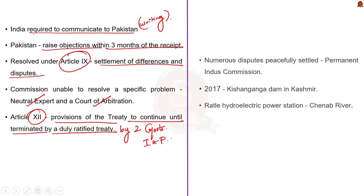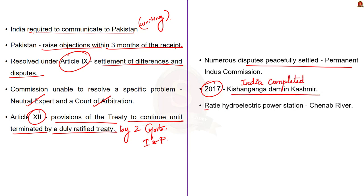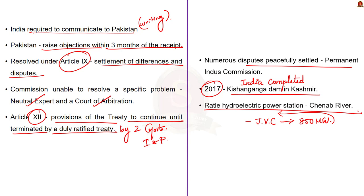Numerous disputes were peacefully settled over the years through the Permanent Indus Commission. In a significant challenge to the treaty, in 2017, India completed the building of Kishan Ganga Dam in Kashmir and continued work on the Ratle hydroelectric power station on the Chenab river, despite Pakistan's objections and ongoing negotiations with the World Bank over whether the designs violated the treaty. A joint venture company has been incorporated for the implementation of the 850-megawatt Ratle hydroelectric project. These are some of the issues between India and Pakistan over the Indus Water Treaty.